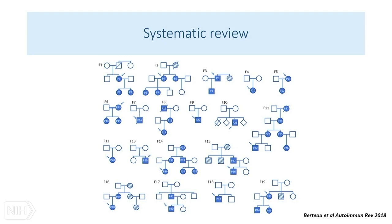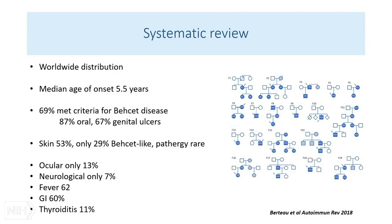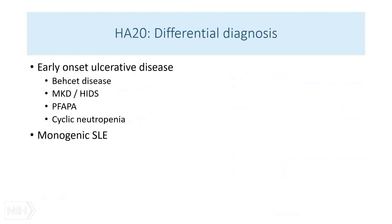The last paper to cover is a systematic review by Berto looking at 19 families with approximately 54 patients. HA20 has a worldwide distribution, very high penetrance, and early onset. About 70% looked like they had Behçet's. Almost all had oral ulcers, and two-thirds had genital ulcers, with varying frequency of other manifestations. Thirteen percent had only eye disease. It is very rarely diagnosed thus far, but I think if we look, we're going to find more cases.